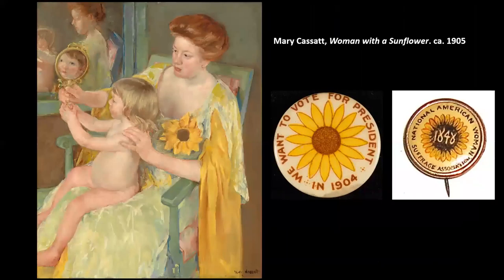If we look at Mary Cassatt's Woman with a Sunflower side by side with these buttons, as Georgopoulos does in her research, I think we can see a very, very close comparison. We should probably think of that sunflower not just as decoration, but as a symbol of this woman's support of women's suffrage — and also of the artist Mary Cassatt's support of women's right to vote. We know that Cassatt supported the cause of suffrage.